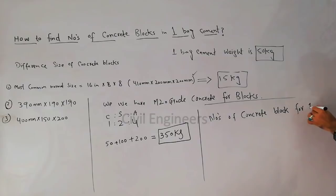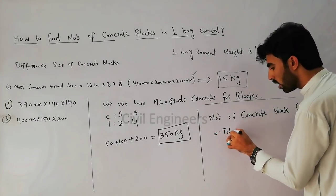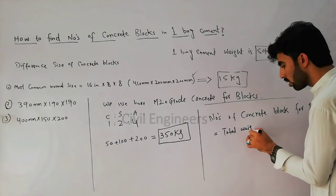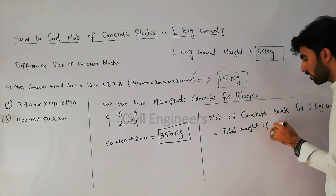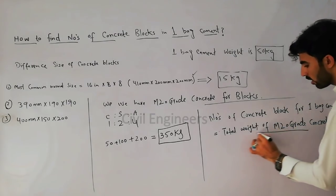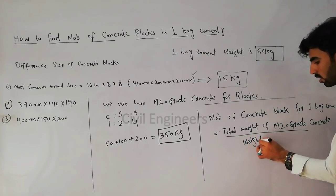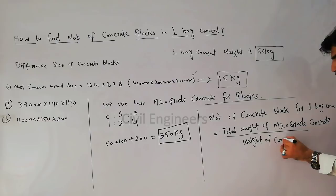The formula for number of concrete blocks in one bag of cement is: total weight of M20 grade concrete divided by weight of one concrete block.